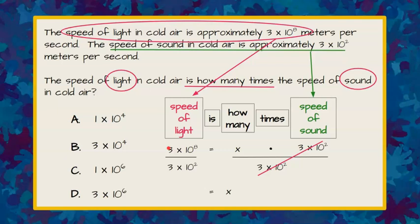Now to divide scientific notation, we divide the factors first. 3 divided by 3 is 1. Then we divide the powers by subtracting the exponents. So when you divide powers, you subtract the exponents. 3 divided by 3 is 1, and 8 subtract 2 is 6, so our power will be 10 to the 6th.